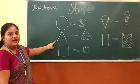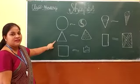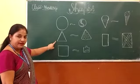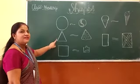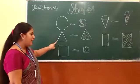And the second one is a triangle. Which shape is this? This is a triangle.